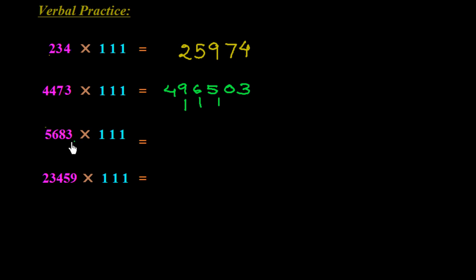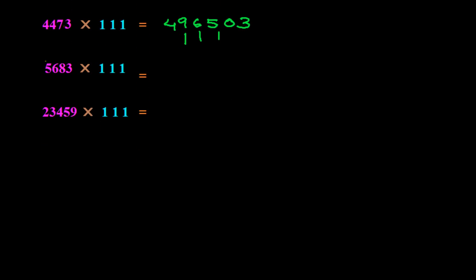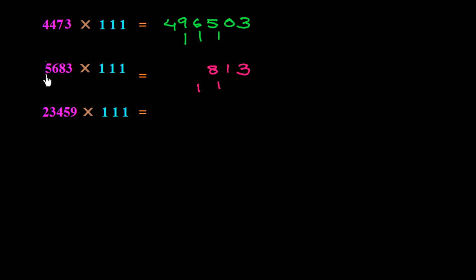Now 5683 × 111. Write 3, then 8 plus 3 is 11 — write 1, carry 1. Then 6 plus 8 plus 3 is 17 plus 1 is 18 — write 8, carry 1. Then 5 plus 6 plus 8 is 19 plus 1 is 20 — write 0, carry 2. Then 5 plus 6 is 11 plus 2 is 13 — write 3, carry 1. Finally 1 plus 5 is 6. Answer: 6, 3, 0, 8, 1, 3.